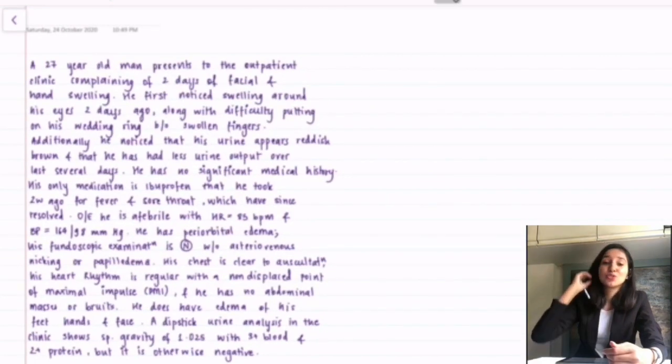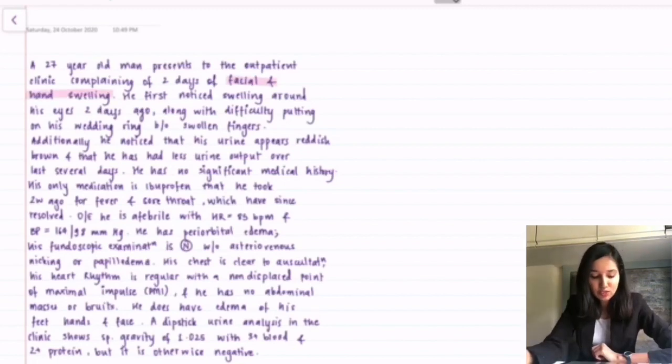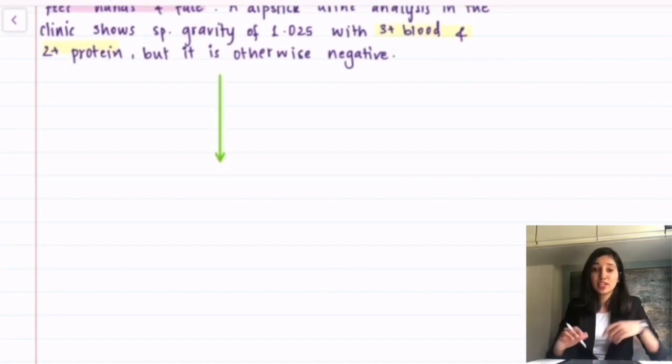Let's break it down, shall we? Our patient has facial and pedal swelling since two days, hypertension, oliguria, hematuria and proteinuria. There appears to be no sign of any respiratory or cardiovascular abnormalities and no abdominal masses or bruits. This suggests that our patient could have acute kidney injury.